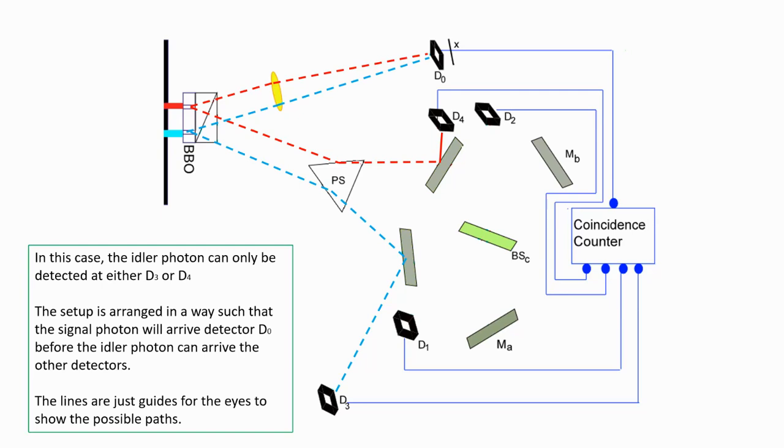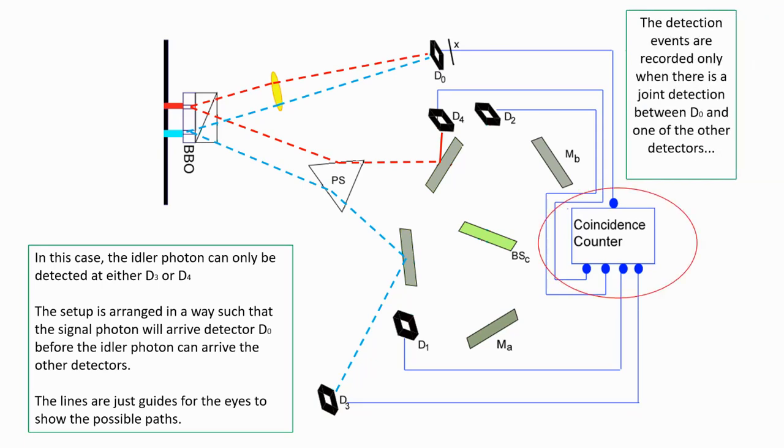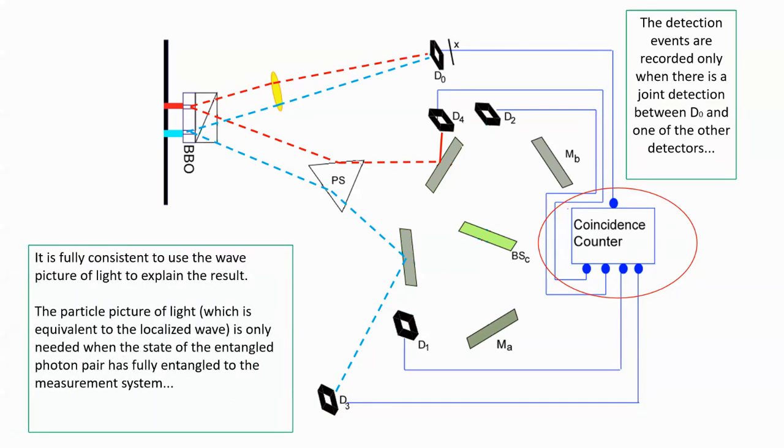The results are obtained by joint measurement using the coincidence counter. The detections are only kept when there is a joint measurement. I think it is important to note that it is consistent to use the wave picture of light to explain the result.